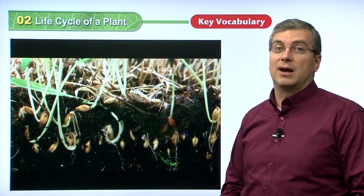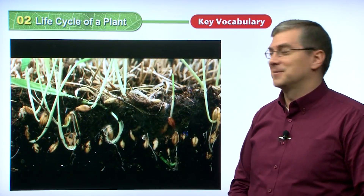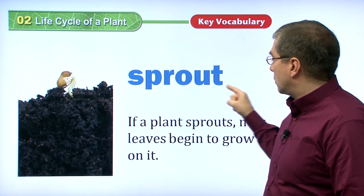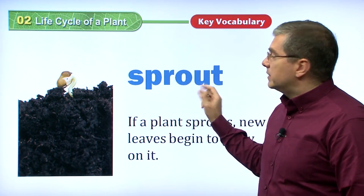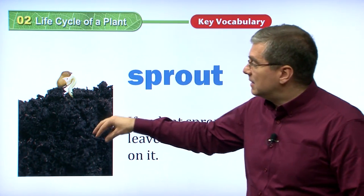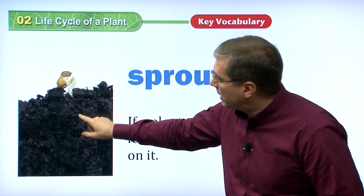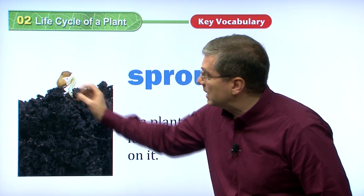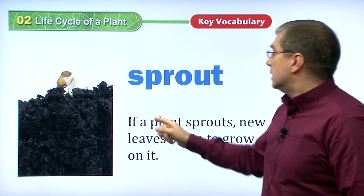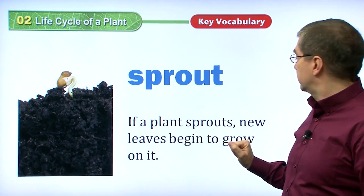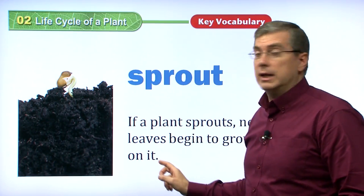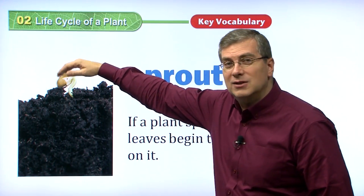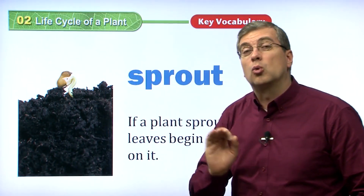They will sprout up through the ground. It's really amazing. So the word I used — sprout — we're using this as a verb. These seeds will sprout up. We can imagine there's a seed under the ground, and this seedling is sprouting up through the dirt. If a plant sprouts, new leaves begin to grow on it. Basically, this seedling is growing up and starts to put out leaves right away, because leaves are a very important part of the plant.